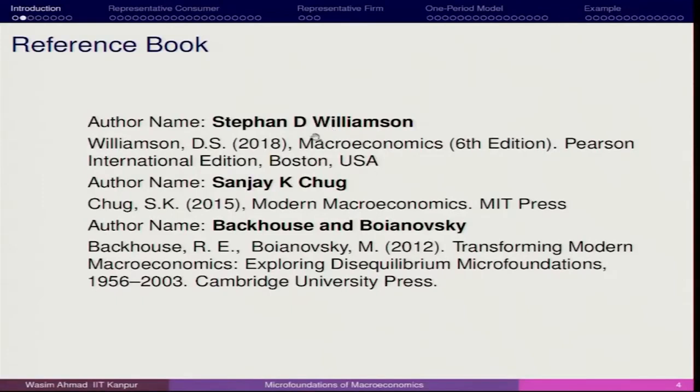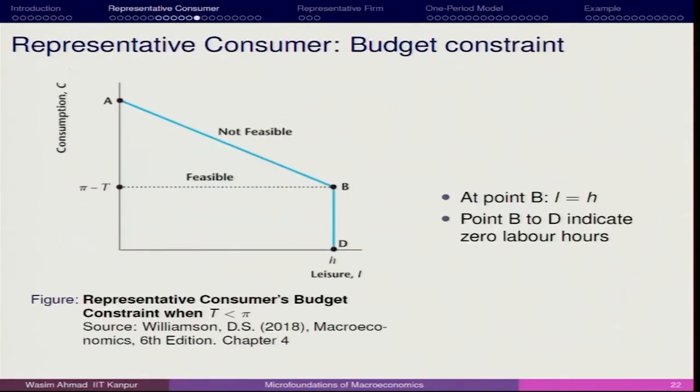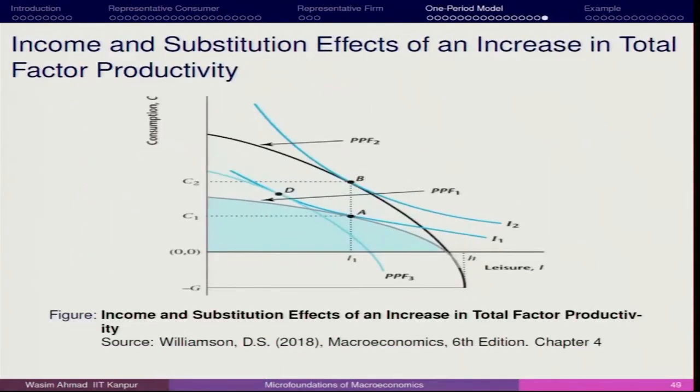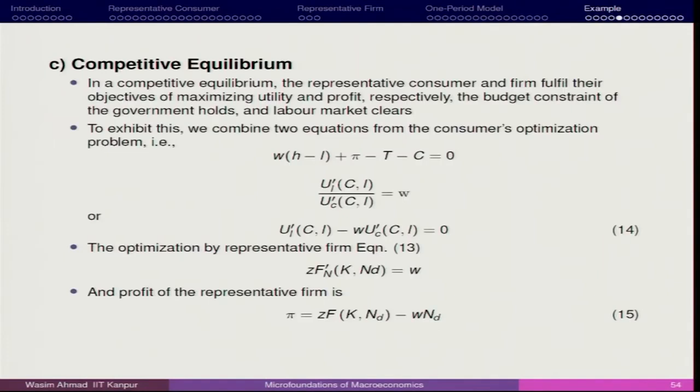In order to make sure that the competitive equilibrium we have achieved remains efficient, we also have a new agent — the social planner — which is basically the government, which ensures there is no exploitation of the consumer by the firm. Since the consumer is also the wage receiver, whatever the market decides, he or she has to accept. In that context, we were trying to see — and towards the end I think we had covered most of the part. The reference remains the same: the Stephen Williamson book and the Sanjay Chook that we have referred. We were talking about the optimality condition and we mentioned in detail about the competitive equilibrium.